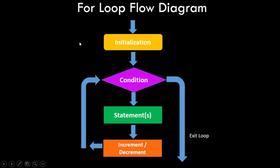This is the for loop flow diagram. First the initialization happens, then the condition is checked. If the condition is true, the statements inside the for loop are executed. If the condition is false, the for loop exits and the control is taken outside the for loop. Till the condition is true, the statements are executed, then the increment or decrement happens.